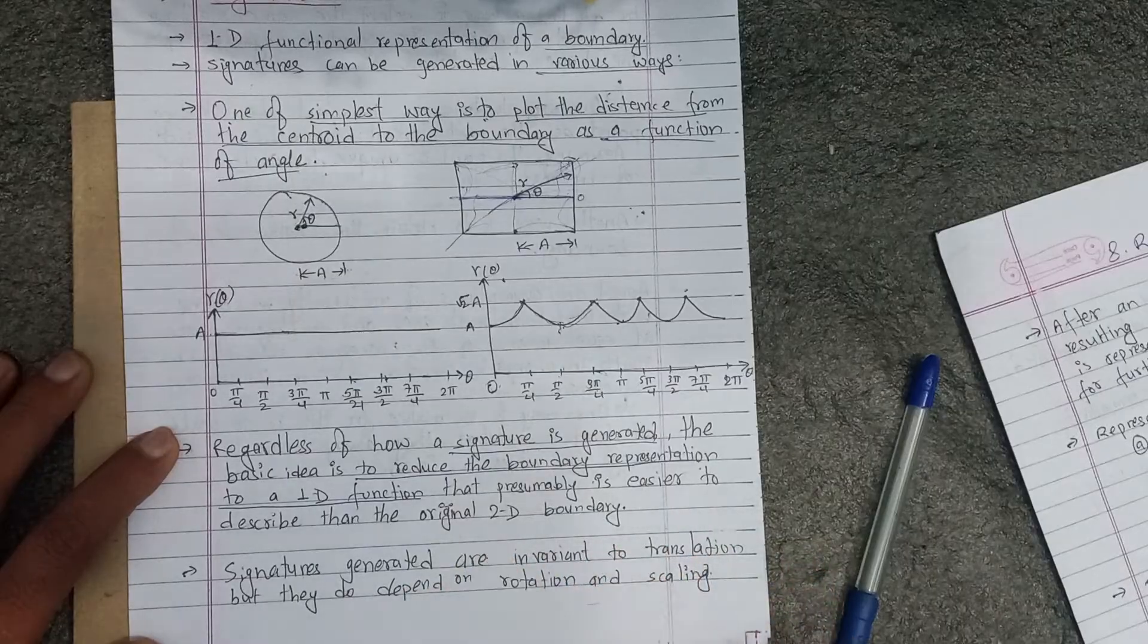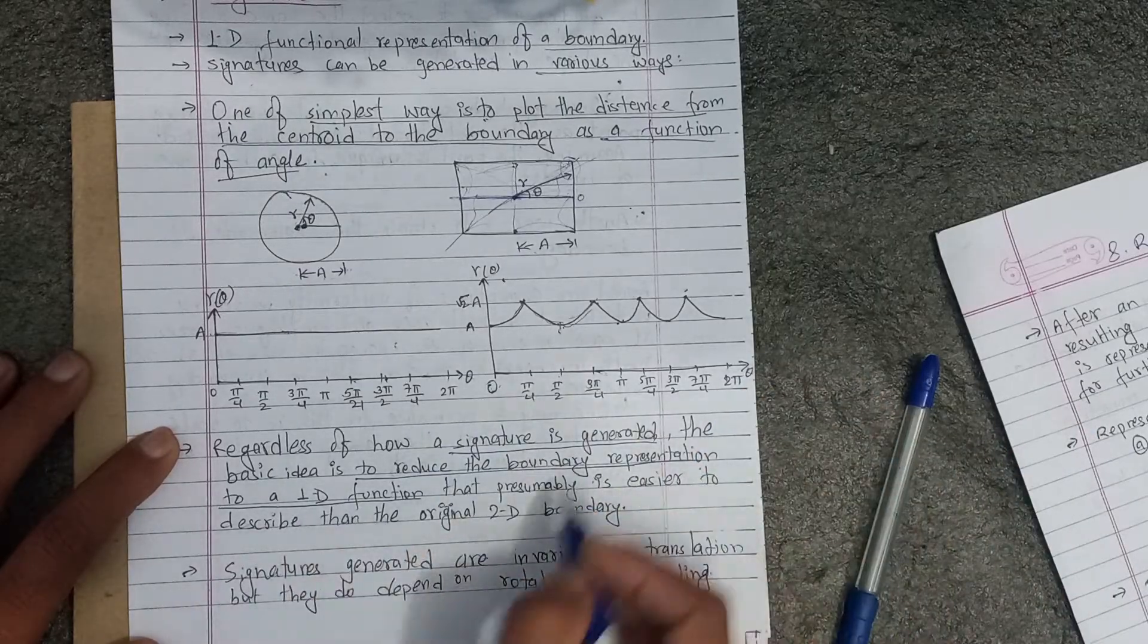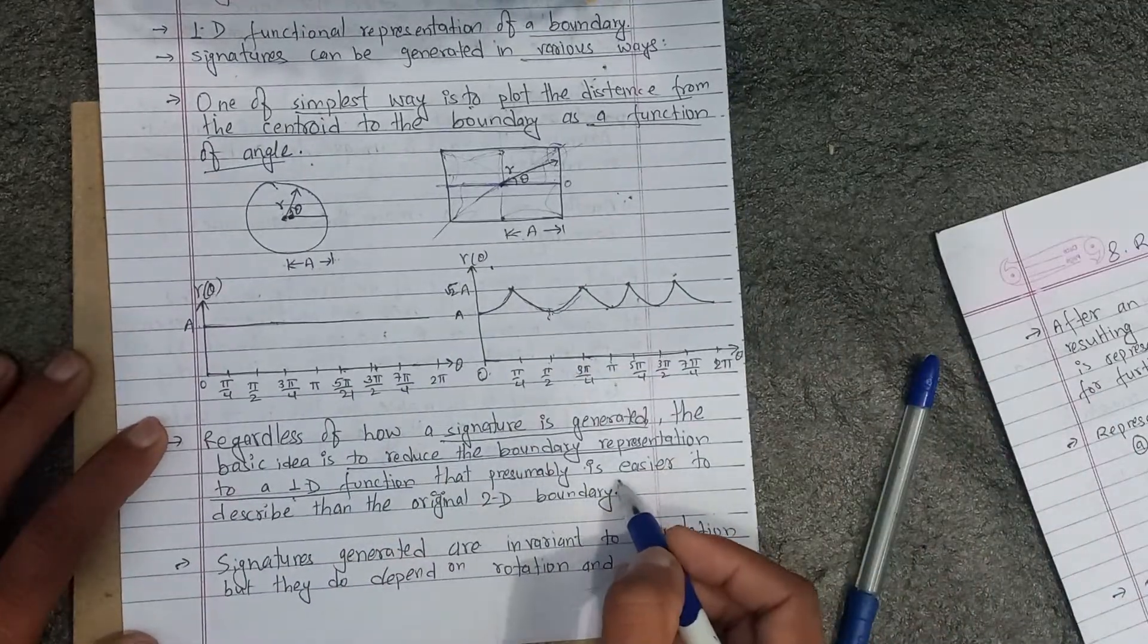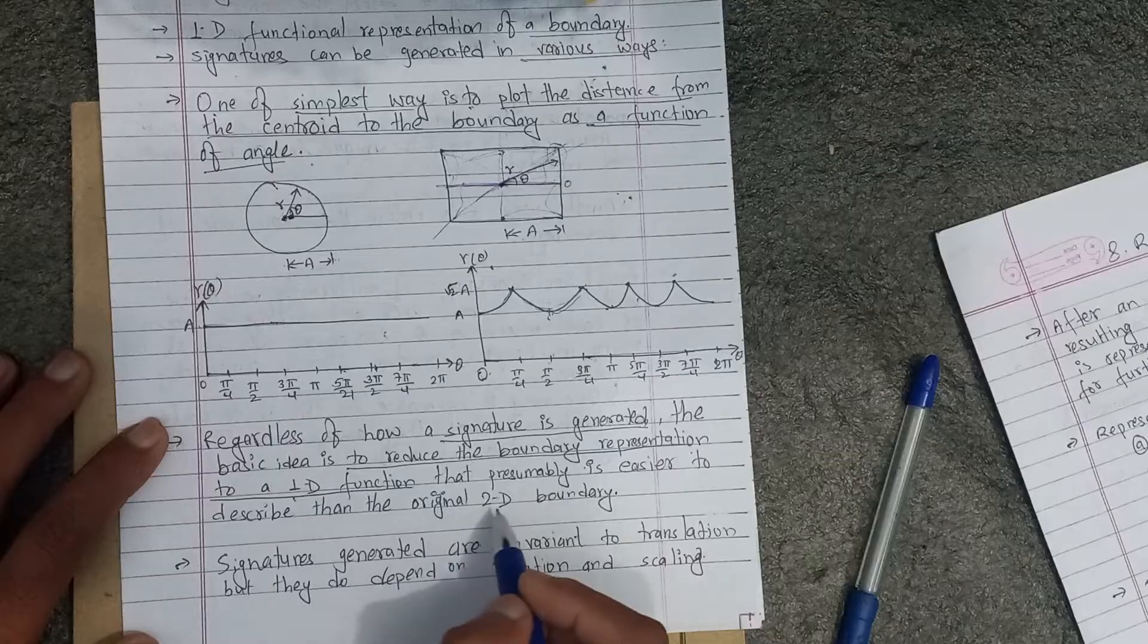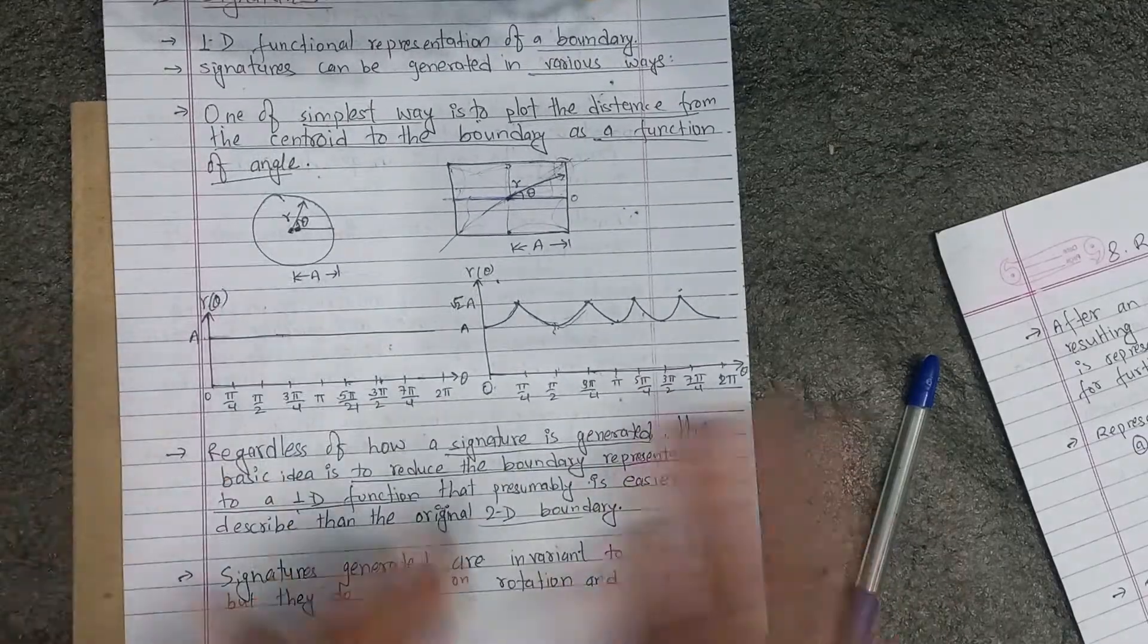This means that the boundary representation will reduce to one-dimensional, and that is easier to describe than the original 2D boundary.